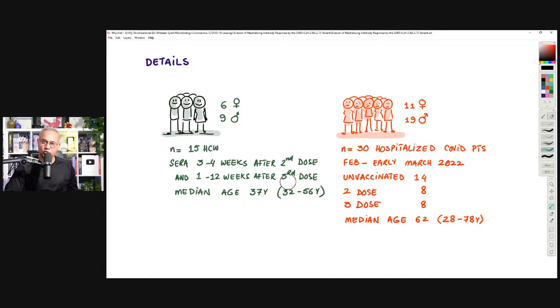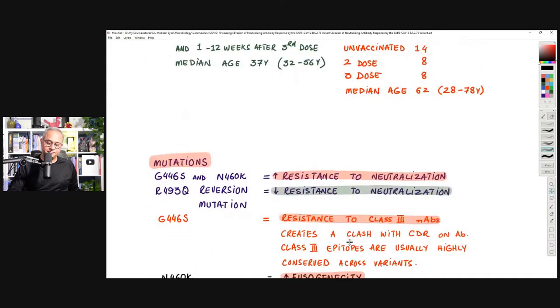15 healthcare workers who were two-dose or three-dose vaccinated, Pfizer or Moderna. 30 hospitalized, not ICU-bound or not severe patients. Between February to early March 2022, which was Omicron BA.2 type time or Omicron time, unvaccinated were 14, two-dose vaccinated were 8, three-dose vaccinated were 8, and median age here in the patients was 62, 28 to 78 was the range. The healthcare worker side, the median age was 37 years and 32 to 56, so kind of more on the younger side.